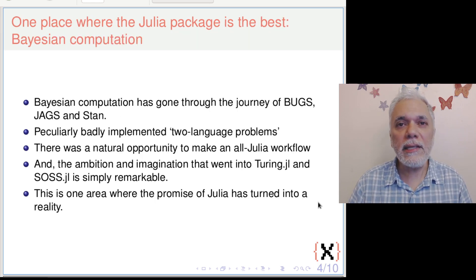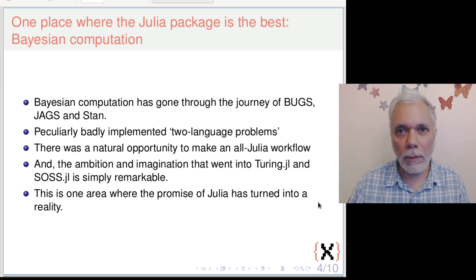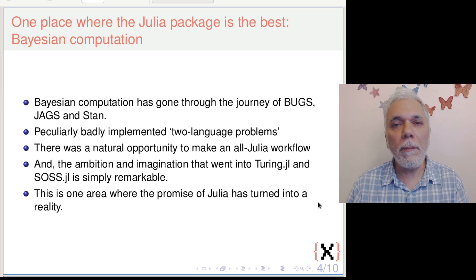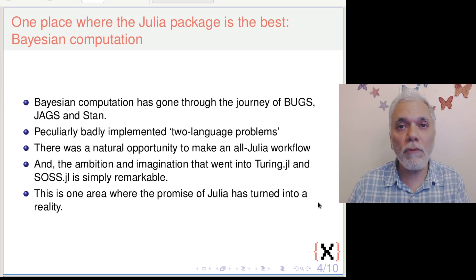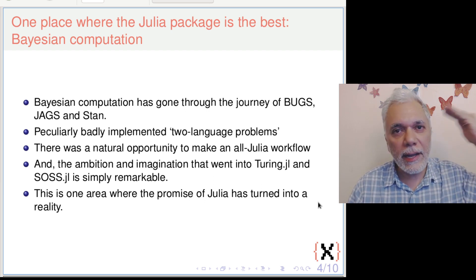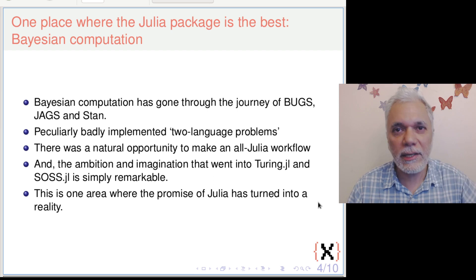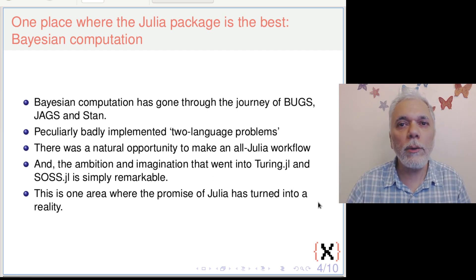In my opinion, the single place where the greatest translation of Julia's promise into a living reality has taken place lies in Bayesian computation. In the world of Bayesian computation, we've gone through a long journey of BUGS, then JAGS, then STAN — and in its own way we have had this two-language problem all through. We find ourselves writing an R program inside which there is a STAN program, and that is its own kind of two-language problem.